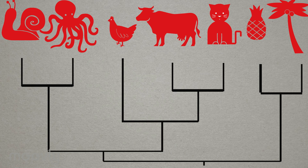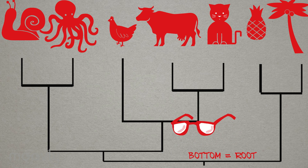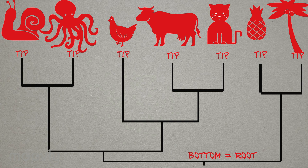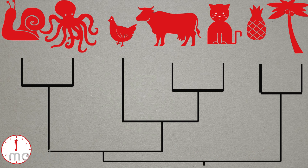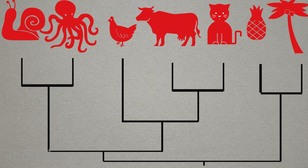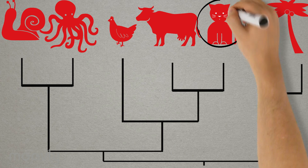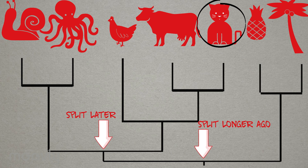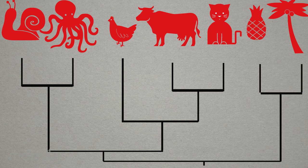We now have a complete phylogeny, which represents the evolutionary history of the organisms depicted here. A couple of notes about how to read this phylogeny: it should always be read from the bottom to the tips. Because we built our tree while considering past speciation events, there is a time element where the root node is the oldest event, and we approach the present as we move toward the tips. We can use the phylogeny to navigate through evolutionary history — we can see that the ancestor of cats split from the plants before it split from the mollusk lineage. We can conclude that the reason a cat looks more like a chicken than an octopus is that it shared a longer evolutionary history with the chicken than it did with the octopus.